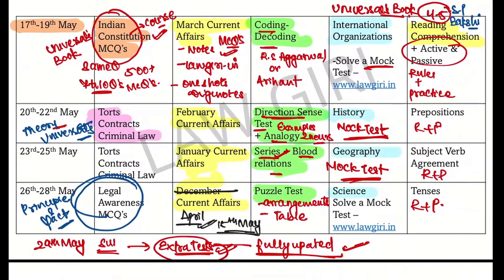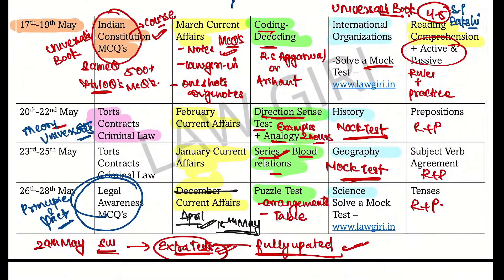If you are lucky you can score 100 plus. This exam is very easy. Who is accepting this challenge? Tell me in the comments what stage of preparation you are in, what your problems and doubts are. And what is your aim — GLC Mumbai, ILS Pune? Comment and tell. That's it — Logri signing off. Please solve the mock test — the 'how to attempt' video is on the link on screen.